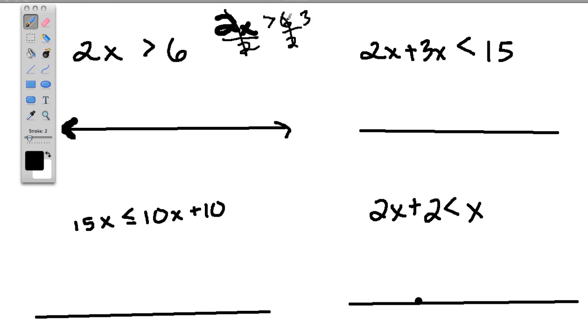2 divided by 2 is 1. 6 divided by 2 is 3. So really, this is like saying x is anything bigger than 3. And that makes sense. I mean, if x was 3, it would be 2 times 3. And 6 is not bigger than 6. So whatever number we put in here has to be bigger than 3.